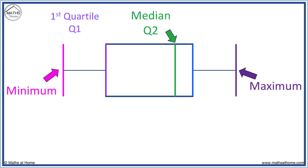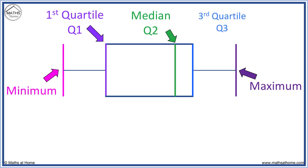The first quartile is the start of the box. The third quartile is found at the end of the box.